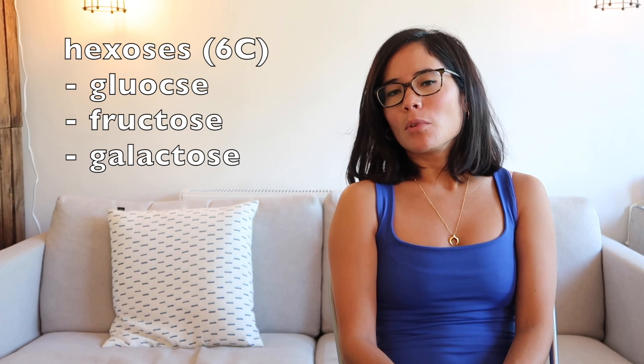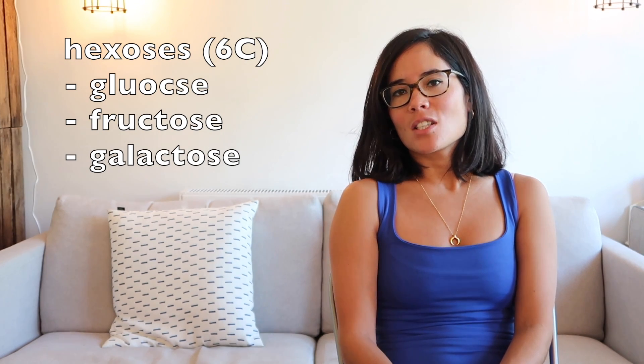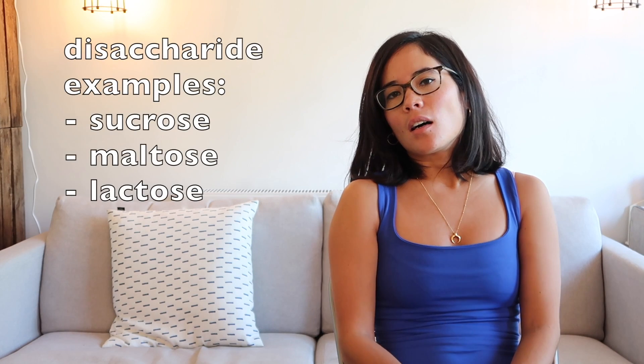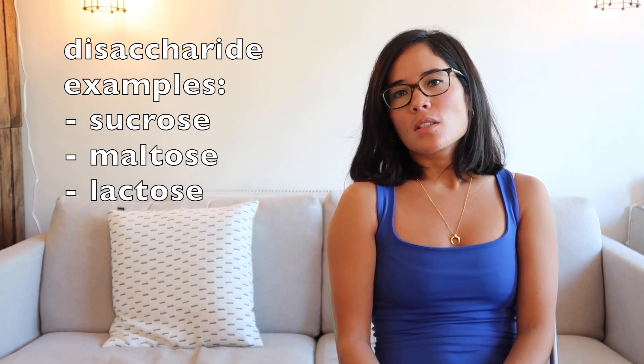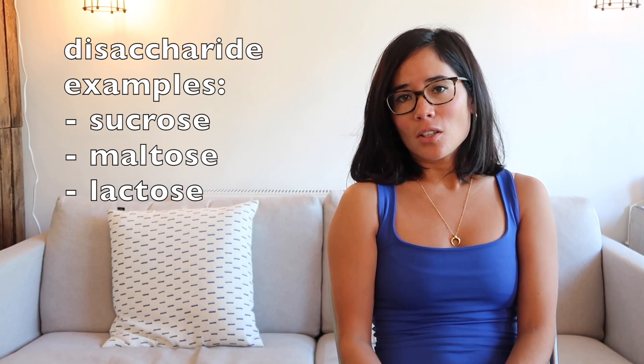Glucose — maybe you had to learn the formula at GCSE — is C6H12O6. It's a hexose because it contains six carbons. Moving on to disaccharides, those sugars made up of two sugars stuck together: your key examples are sucrose, maltose and lactose.